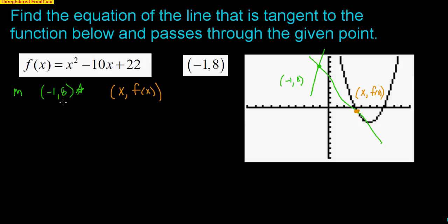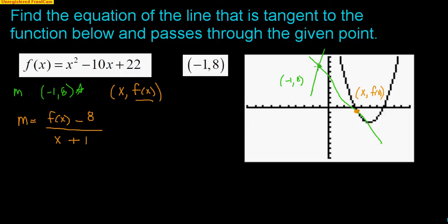If I have two points, I can find the slope. I take the y values — f(x) minus 8 — over the x values — x minus (-1), which becomes x plus 1. So the slope of the line between the given point and the unknown point of tangency is (f(x) - 8) / (x + 1).